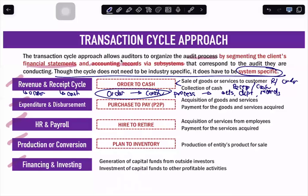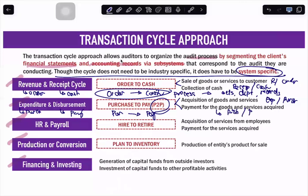Next, we have the expenditure and disbursement cycle, also known as P2P — purchase to pay. It is composed of two items: first, the purchase, which is the expenditure, and then the disbursement, which is the pay. The whole process goes from purchase to payment. We will discuss the different activities within that cycle, the departments involved, the records involved. Specifically, the two main activities are: the acquisition of goods and services (the expenditure or purchase), and the payment for those goods and services (the disbursement or pay).